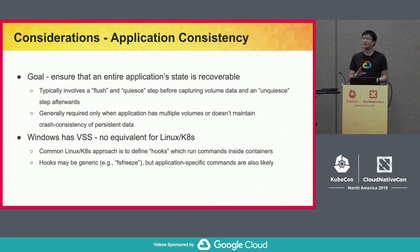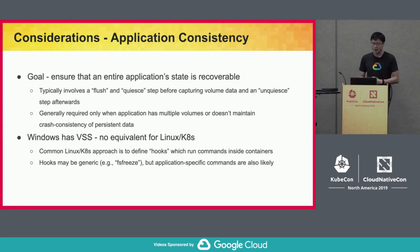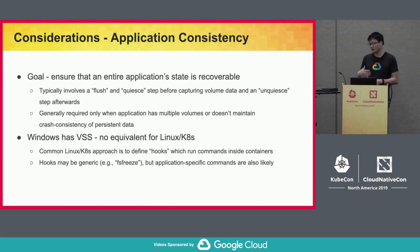This is generally required when your application doesn't have crash consistency or manages a bunch of different volumes. To implement application consistency in Kubernetes, a common approach is to define quiesce and unquiesce commands as hooks called before and after volume-level snapshots or backups. Some hooks are generic, like FS freeze, and some are application-specific — for example, for MongoDB you might call db.fsyncLock to lock the database and flush all writes before taking a filesystem-level snapshot.